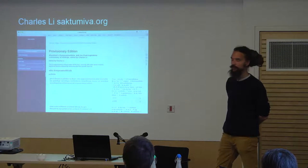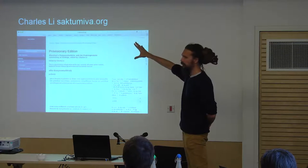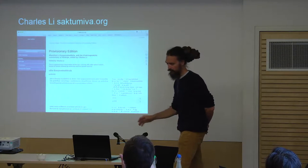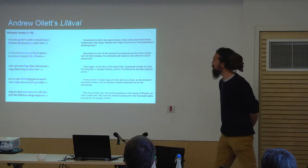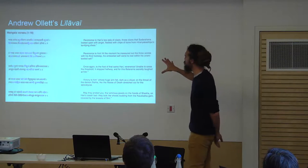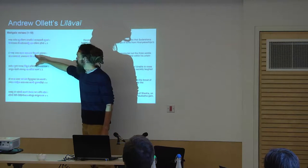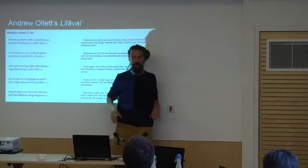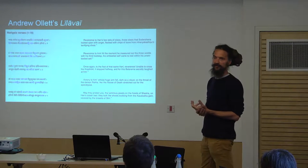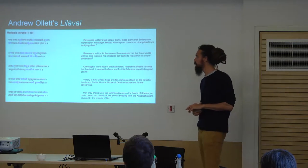One HTML output was developed by Charles Li, who's at Cambridge — a very nice front end at saptumiva.org where you can alter all the parameters, which manuscripts you're looking at, and it will generate an additional apparatus. Another one developed by Andrew Ollett allows you, from an XML file, to wave your mouse over highlighted bits of the edited text and the variants will pop up. What we want is for people to read our critical editions, and this seems to be a very good format to encourage people to look at the variants.